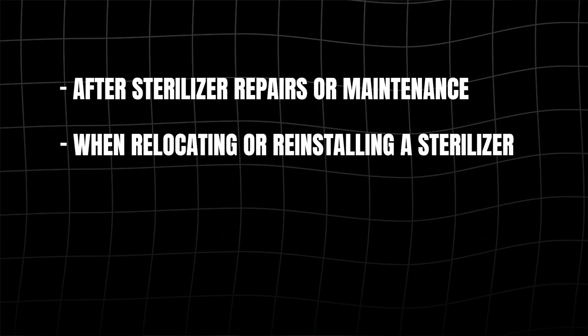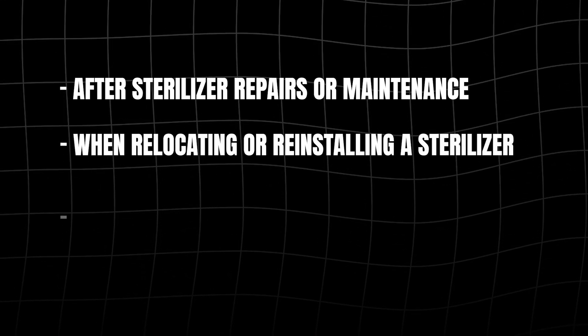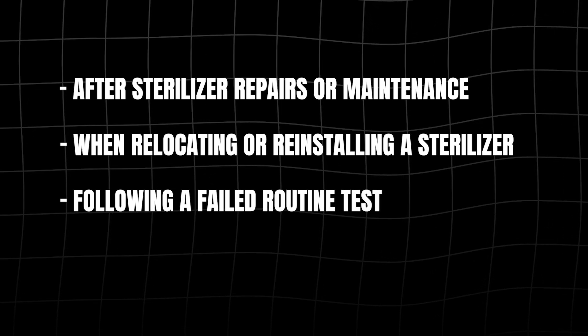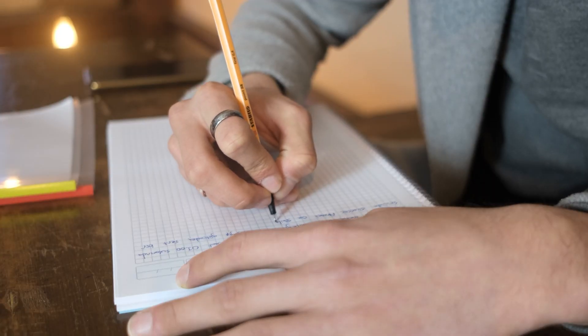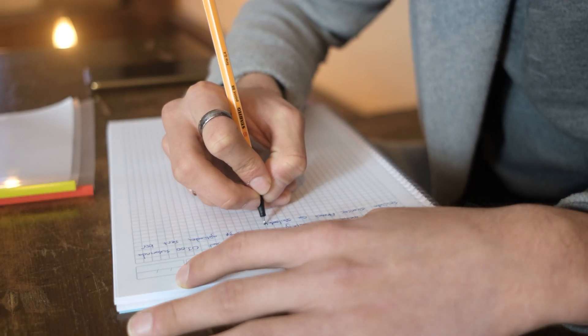Now let's talk about situations that call for testing outside of normal operations. These can include instances like after sterilizer repairs or maintenance, when relocating or reinstalling a sterilizer, following a failed routine test, and after significant downtime or power outages. In these cases, you'll want to repeat all three tests — leak, air removal, and biological. Always document your results and communicate any issues promptly.